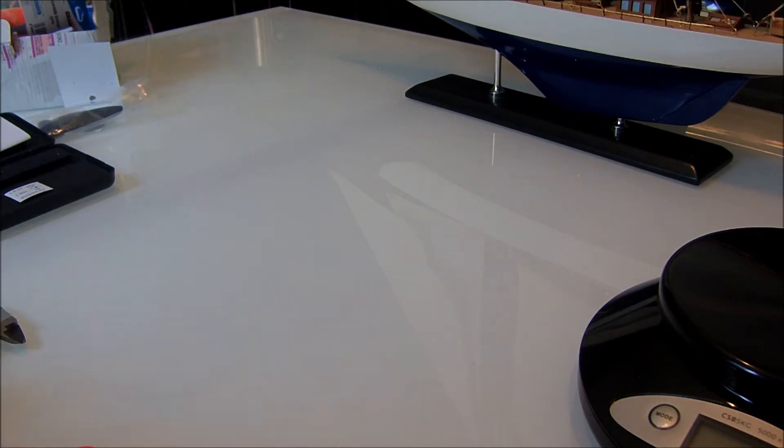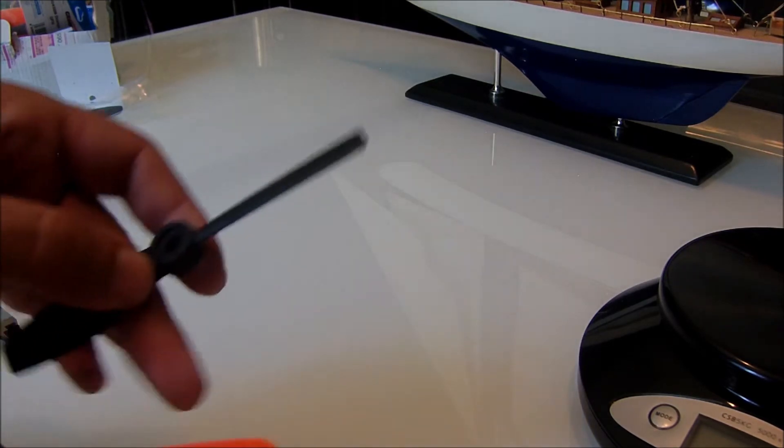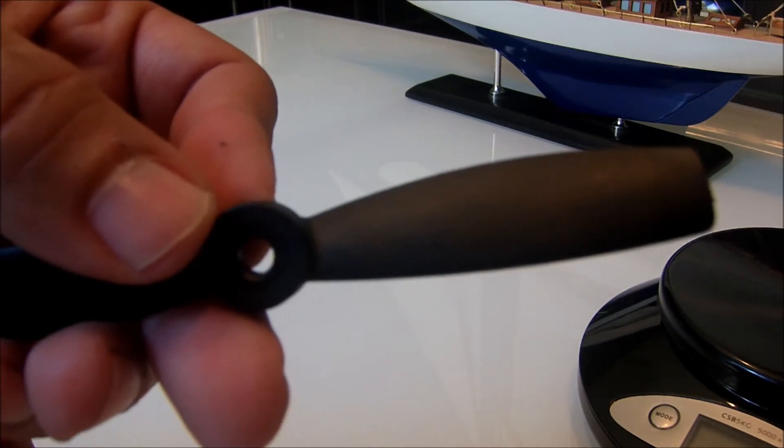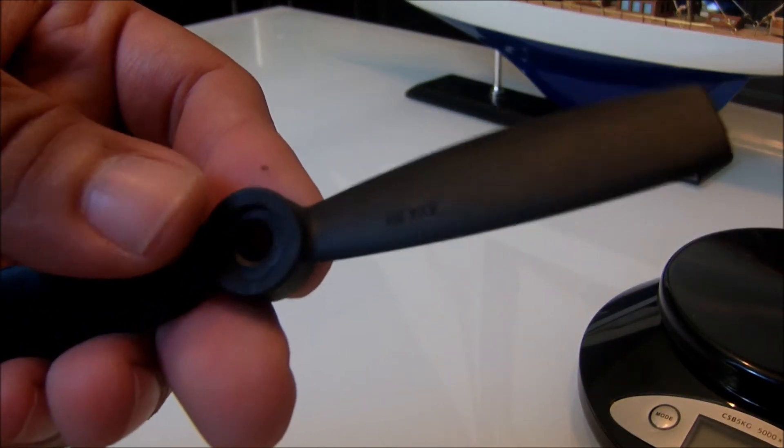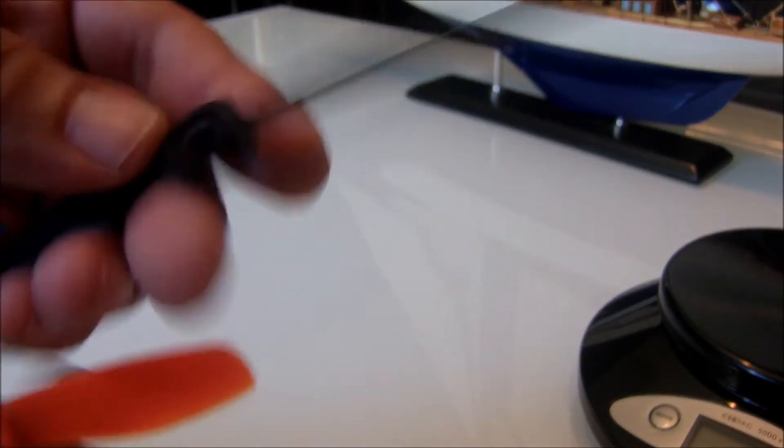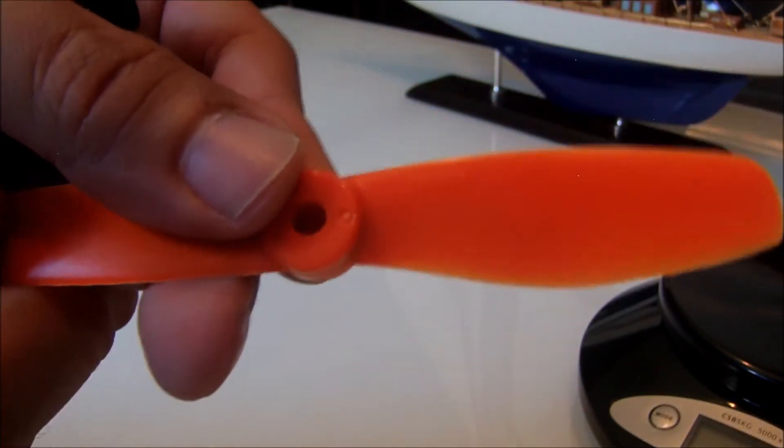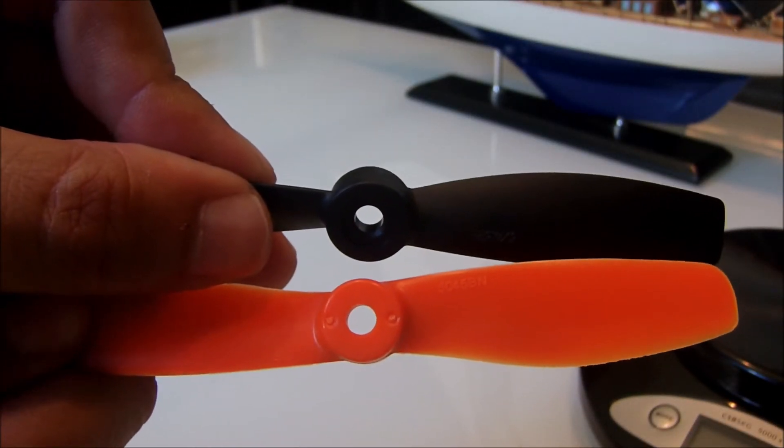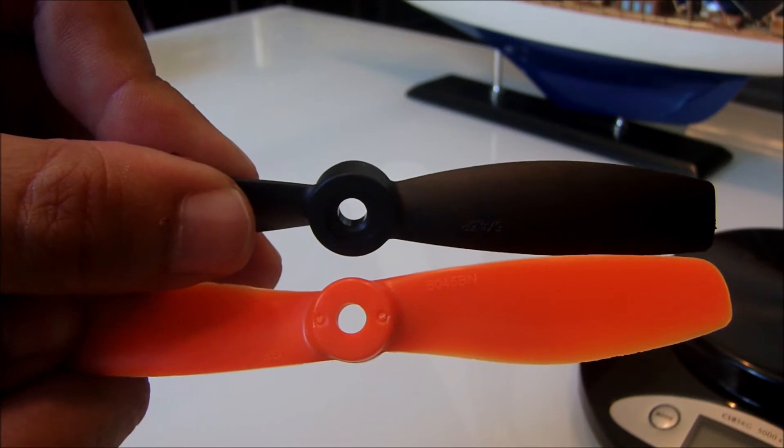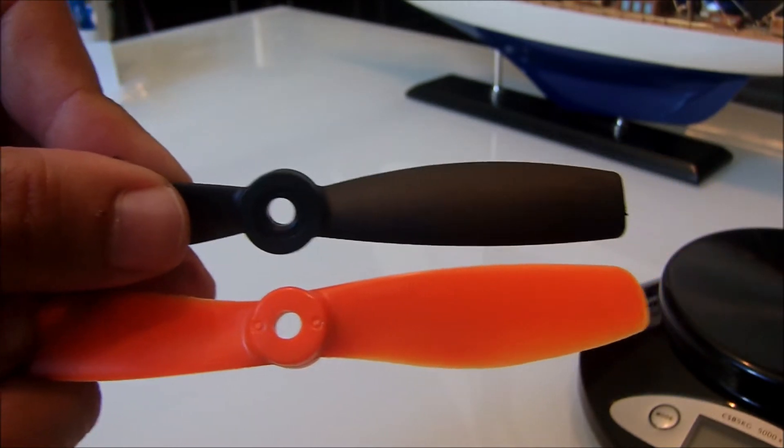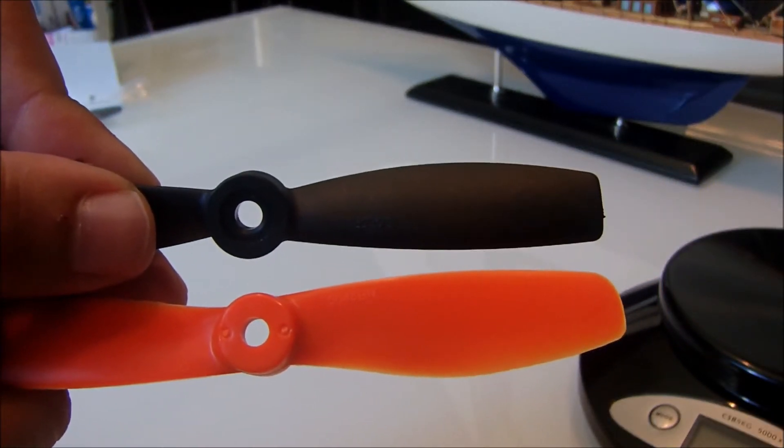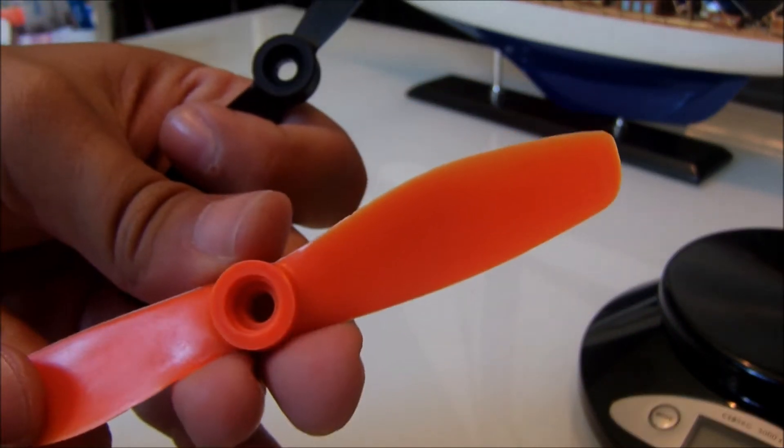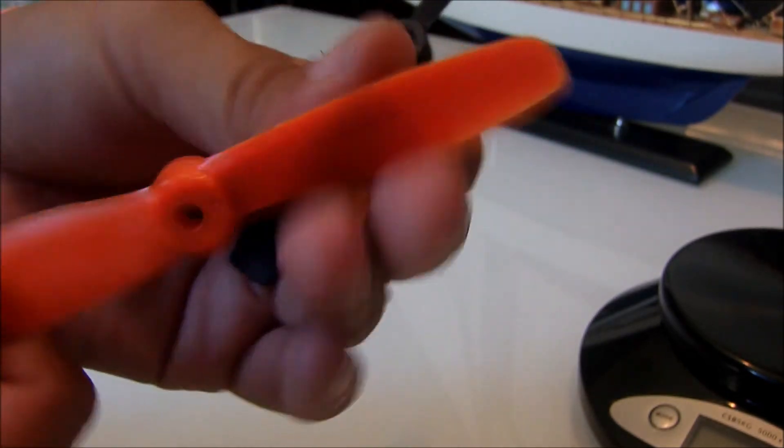Alright, if you look at the hub difference, you can see the HQ has fairly little connection to the hub on the prop itself. These Gemfans are quite a bit different, with a lot more surface area connecting to the center hub. You've got more blade surface area, more hub surface area. I'm going to go fly these today and we'll see how well they do, especially with crashes.